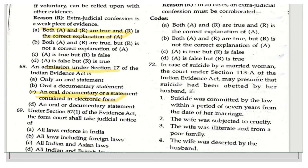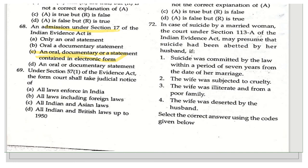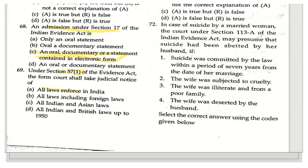The next question is about Section 57 Clause 1 of the Indian Evidence Act: for what type of laws shall the court take judicial notice? The options are: all laws in force in India, all laws including foreign laws, all laws and Asian laws, or all laws and British laws up to 1950. As per Section 57 Clause 1, the court shall take judicial notice of all laws in force in India.